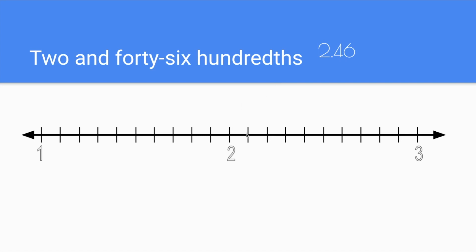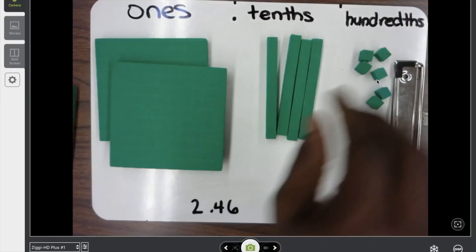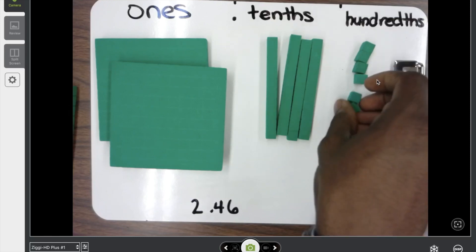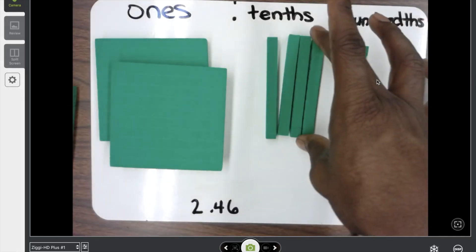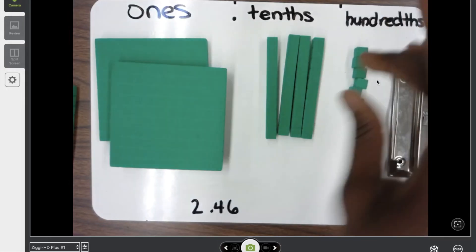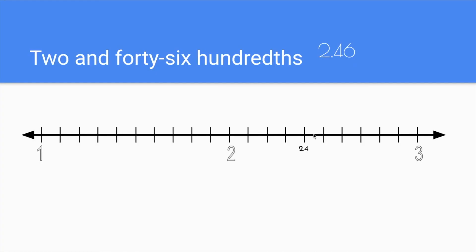We've got two — here's two and one-tenth, two and two-tenths, two and three-tenths, two and four-tenths. Stop here because I see that I have four tenths. But I have to go a little bit beyond four-tenths — I've got to go six hundredths past that. Six hundredths is more than halfway; half of a tenth would be five hundredths. If halfway was right here that'd be five hundredths, but we need to go just a little bit past that to six hundredths. Two and forty-six hundredths — right there.